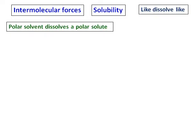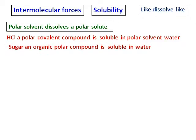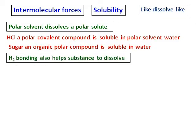For example, HCl, a polar covalent compound, is soluble in the polar solvent water. Same way, sugar is an organic polar compound and it is soluble in water. Hydrogen bonding also helps a substance to dissolve.